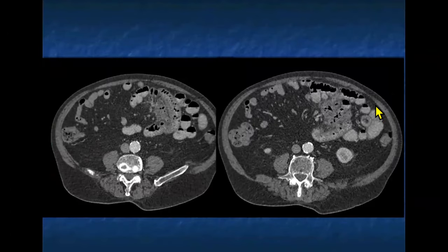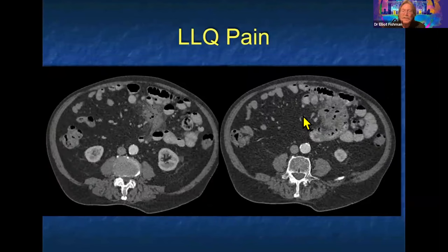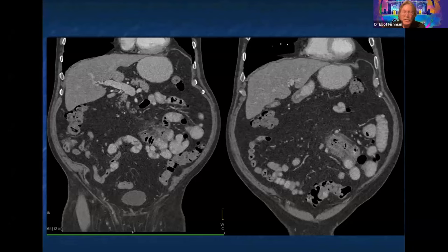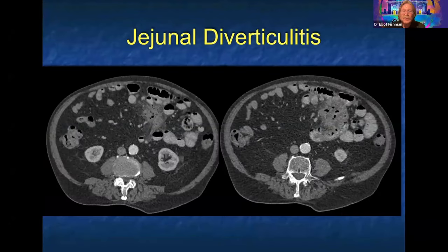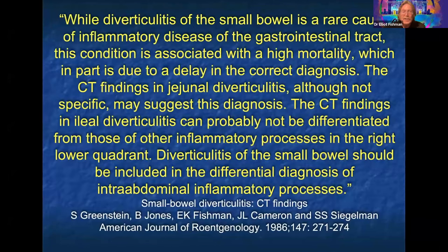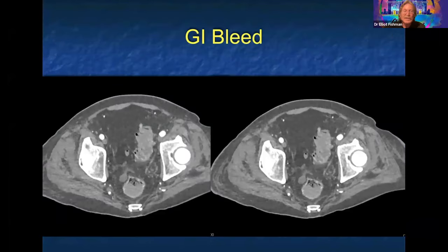Left lower quadrant pain. Answers: carcinoid, diverticulitis, paniculitis. This is coming off the small bowel — it looks like diverticulitis and in fact it is, but it's not your typical colonic diverticulitis. It's small bowel diverticulitis, specifically jejunal diverticulitis, which is far less common and often looks like a perforation. It's pretty rare. I treat it typically conservatively, so it's an important diagnosis to make.